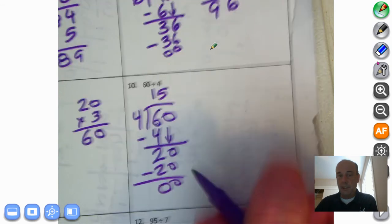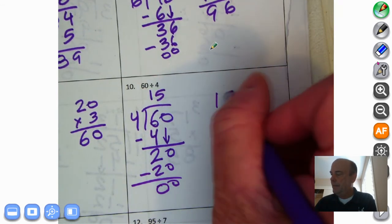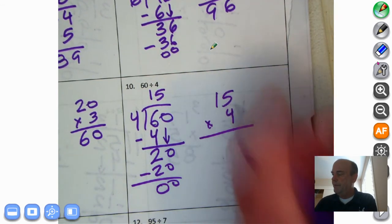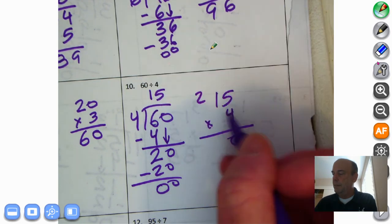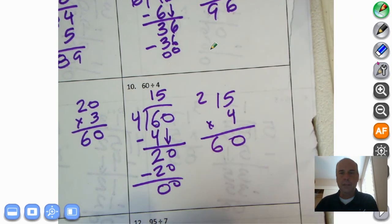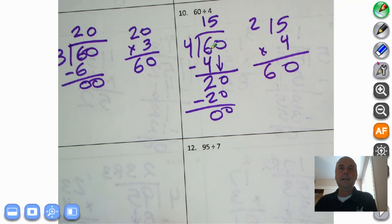0, 0. We'll check. 15 times 4. 5 times 4, 20. 10 times 4 is 40, 50, 60. And we are absolutely correct.